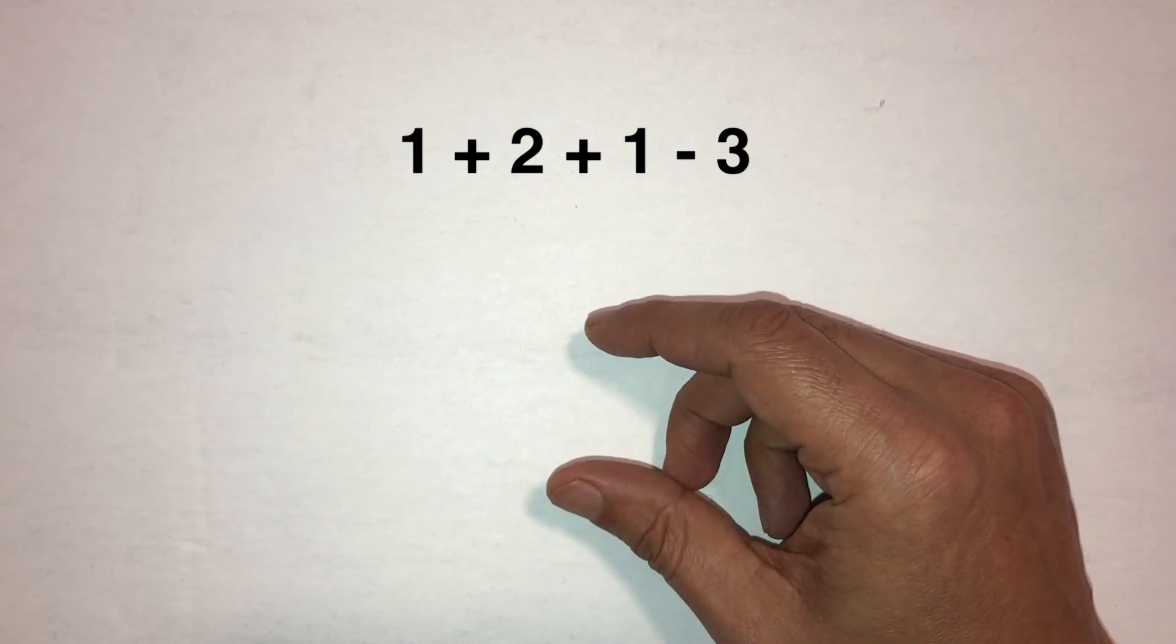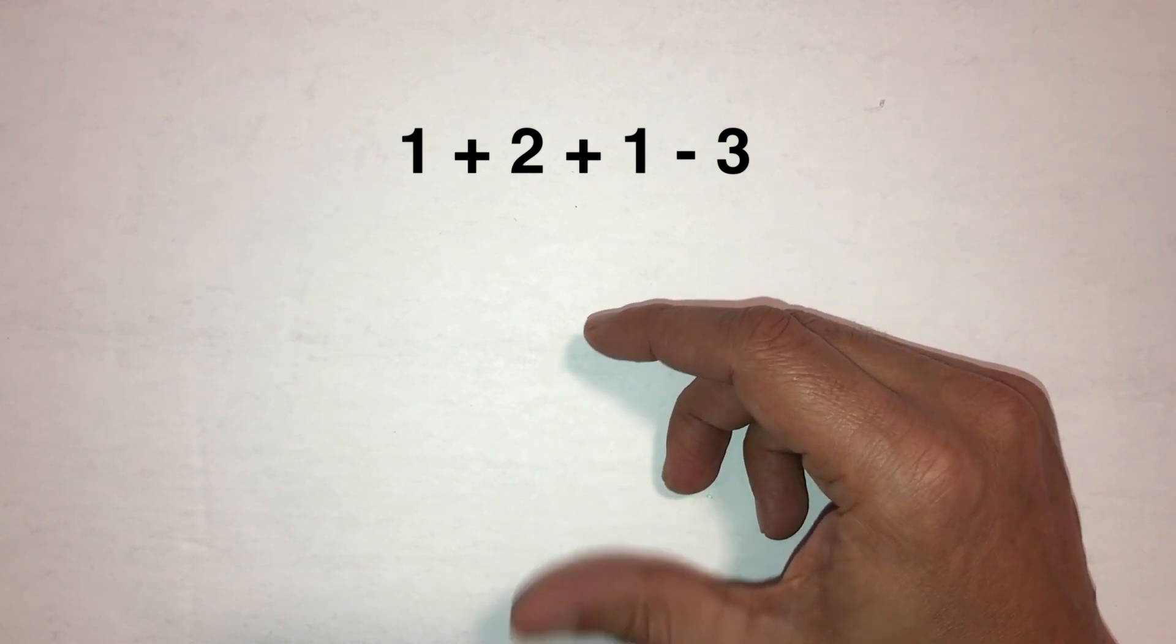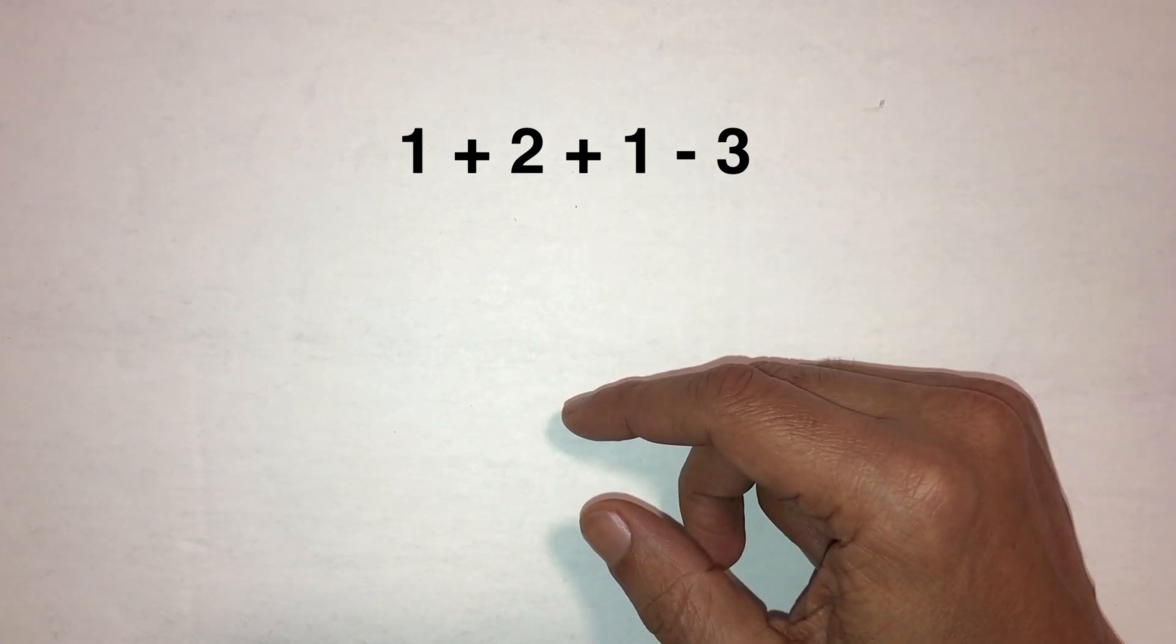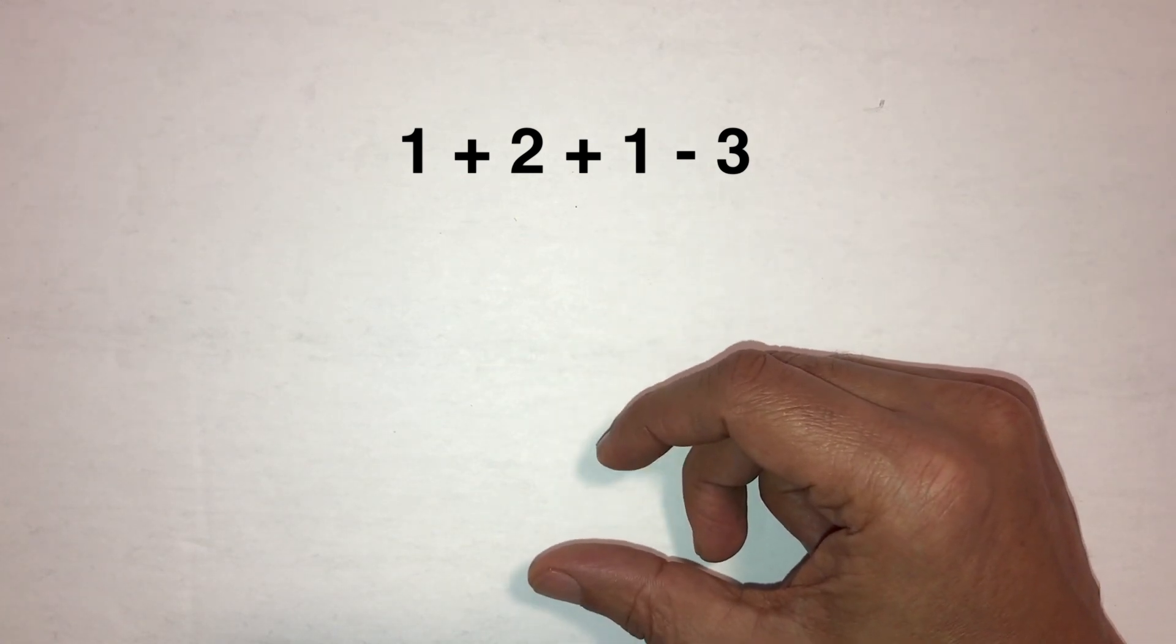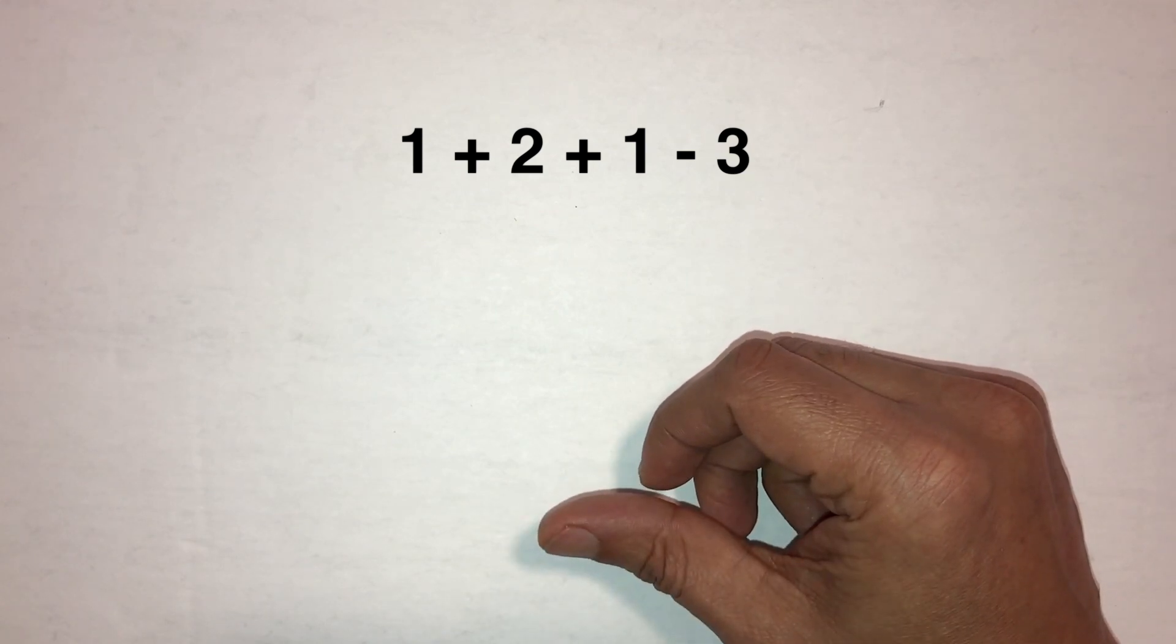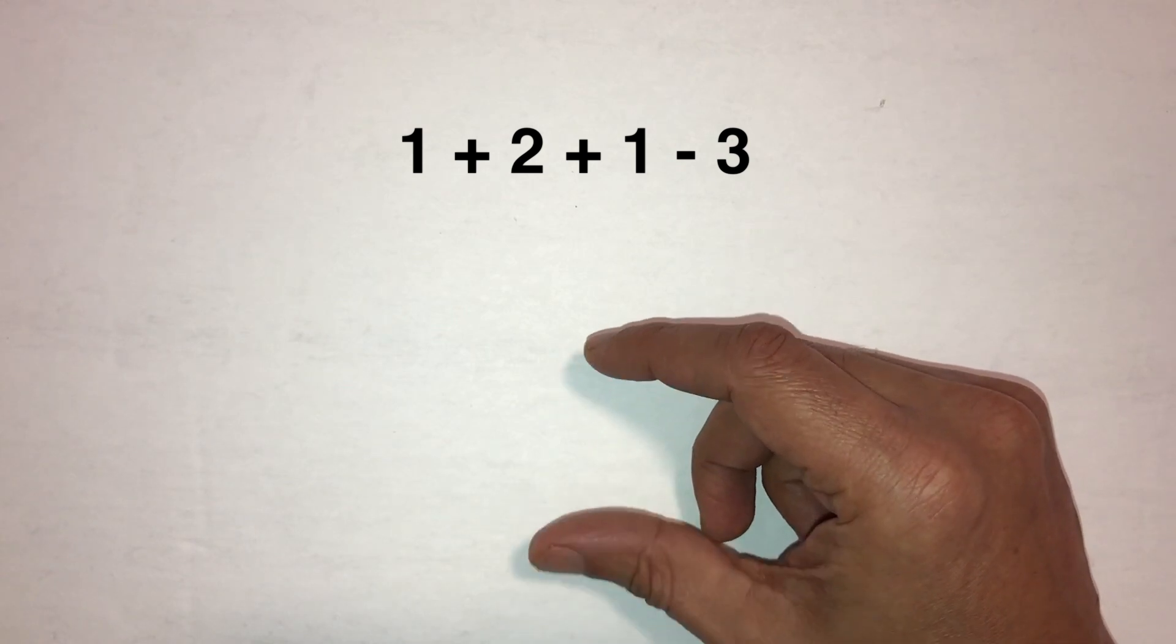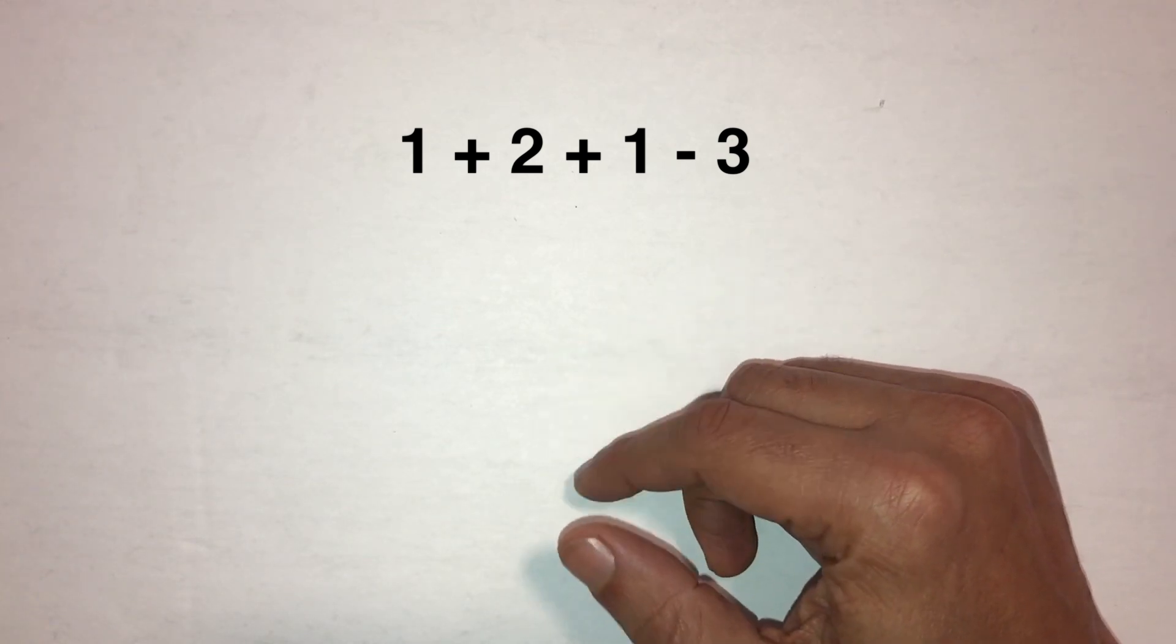So here we go: 1 plus 2, plus 1, take away the 3, answer is 1. Right? So let's try that again. 1 plus 2, we see a 3 touching the answer bar in our mind. Plus 1, now we've got a 4. We take away the 3, we're left with a 1. That's why the answer is 1.